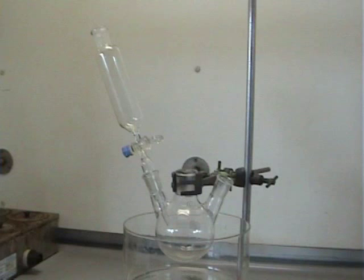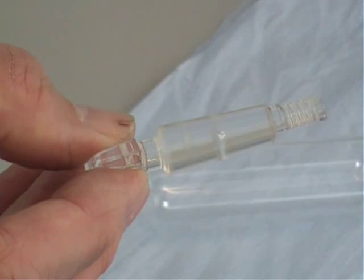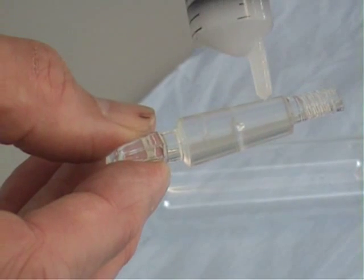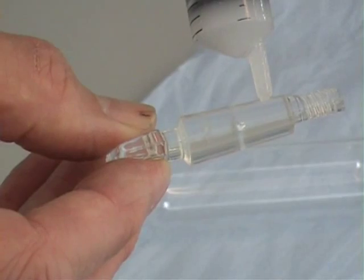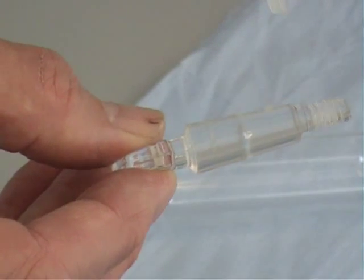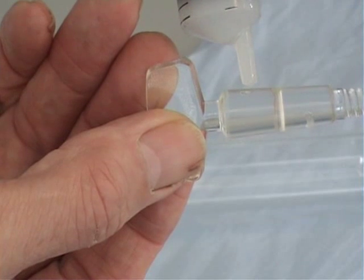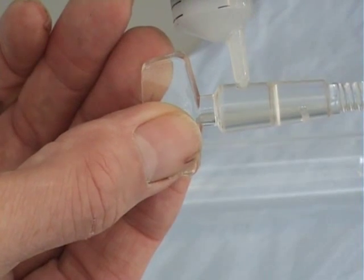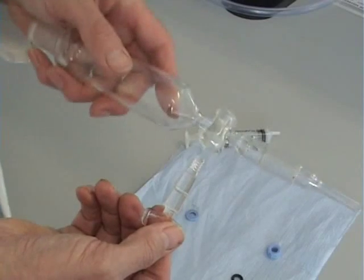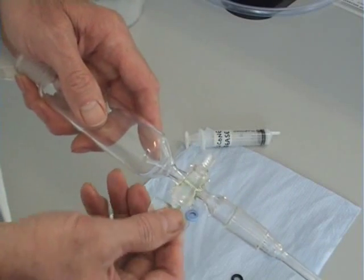A dropping funnel is fitted to the left side of the flask. Check that the tap is greased and moves freely. If not, put a small spot of grease in two places and gently put back, moving the tap to and fro.